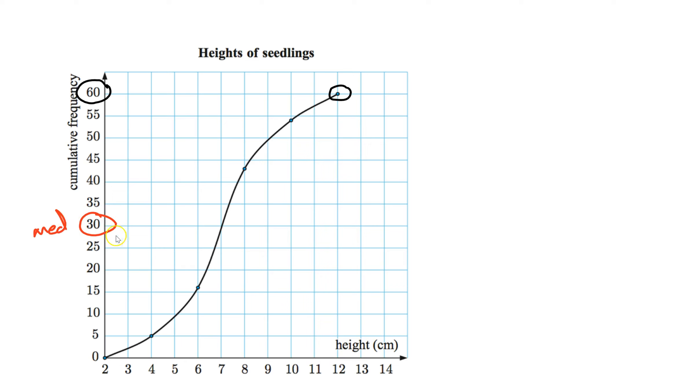Now the trick about cumulative frequency graphs is that you always use the graph. So if I'm starting here at 30, we'll go across, I'm going to go down, 7 is my median. So you always use the graph, you don't go 30, done. No, it's up and across. Now if I want to find Q1, Q1 would be the lower quartile, the median of the bottom half, which would be 15.